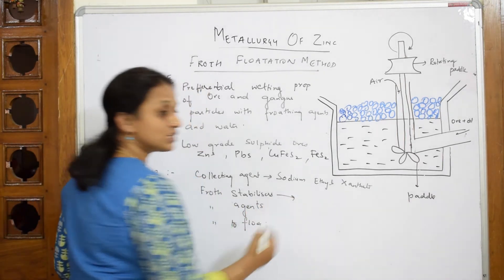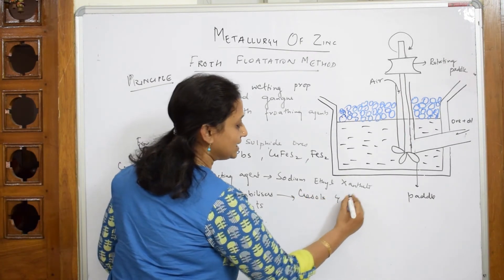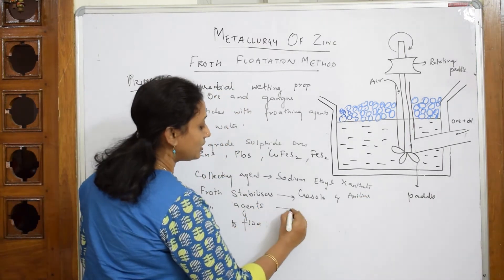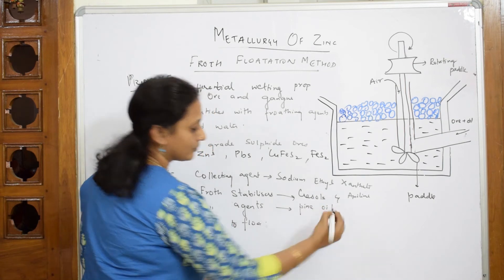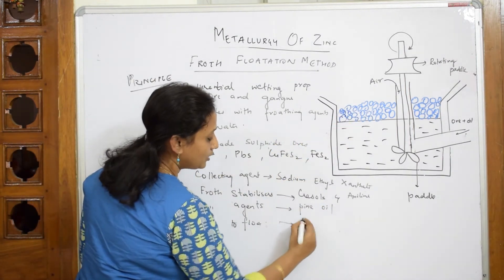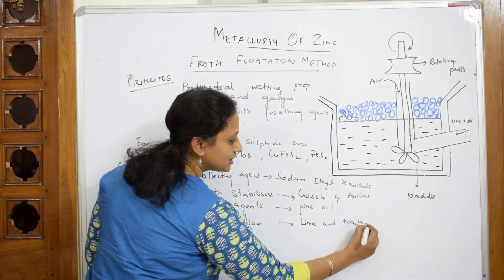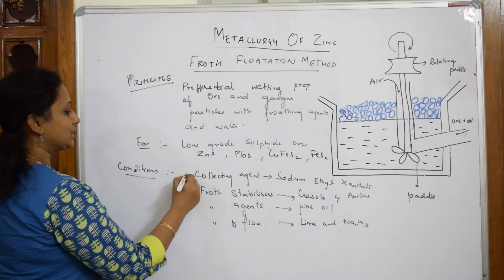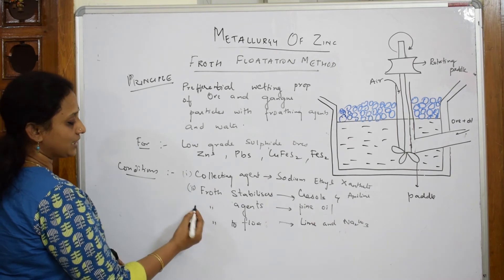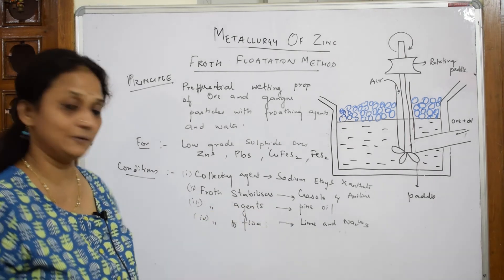The froth stabilizer added is cresol and aniline. For the frothing agent, we add pine oil. For making the froth float above, we add lime and sodium carbonate — you must write all of these. So in summary: one is the collecting agent (sodium ethyl xanthate), two is froth stabilizers (cresol and aniline), three is frothing agent (pine oil), and four is floating agents (lime and sodium carbonate). All four are added.